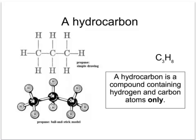This tutorial is all about hydrocarbons. Hydrocarbons are compounds containing carbon and hydrogen atoms only. These pictures show a hydrocarbon called propane, which has got the formula C3H8. It can be drawn in various ways.